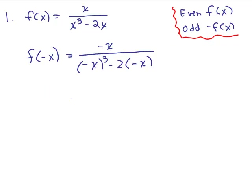So what happens here? Well, I've got my minus x in the numerator. In the denominator, I've got a negative x cubed and a plus 2x. So we have to decide, is that the same function or is it the opposite function or is it neither? And this is a little bit tricky because when you first look at it, it doesn't look exactly the same.